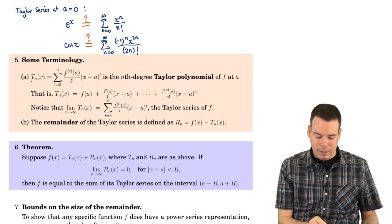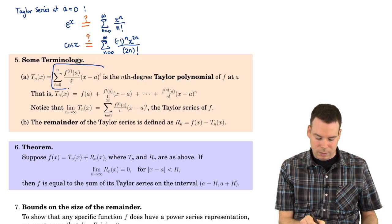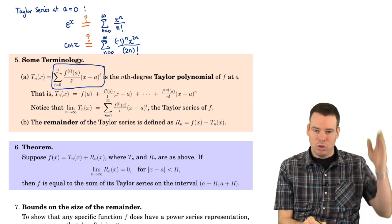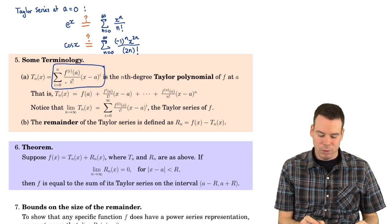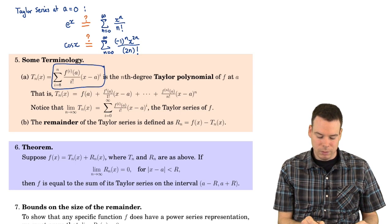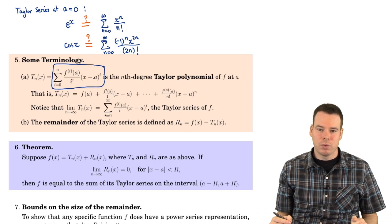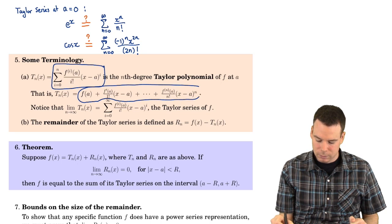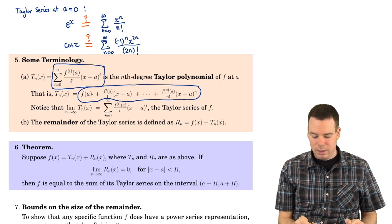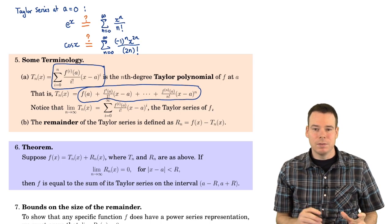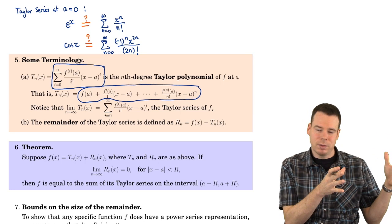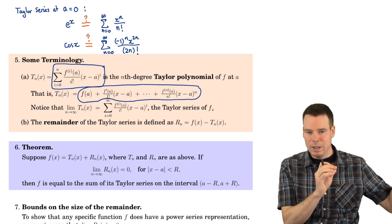A bit of terminology. We're going to call this a polynomial — notice I've truncated the series. The series would have i going from 0 to infinity, but if I chop off the tail and keep just the first n plus 1 terms, all the way up to the power of n, then that's a polynomial. We call that the nth degree Taylor polynomial. The limit as n goes to infinity of these nth degree Taylor polynomials gives us the Taylor series. In general, if we keep all the terms, that's the Taylor series.